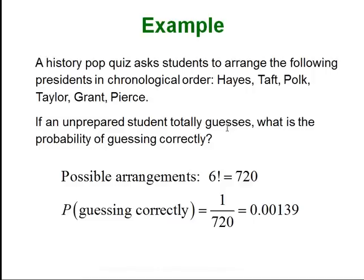Here is another example. A quiz asks students to rearrange 6 presidents in chronological order. Does order matter? Yes — they have to choose all 6 and arrange them, so order matters. That's 6 choices for the first, then 5, 4, 3, 2, 1, giving 720 different ways to arrange 6 things. If they randomly guess, there's only one correct order, so the probability of guessing correctly is 1 over 720 — a very, very small number.